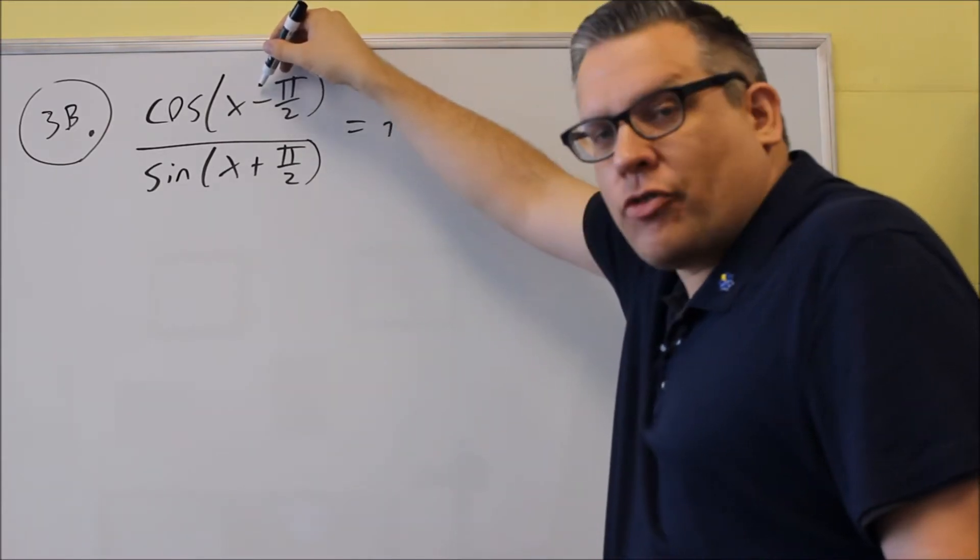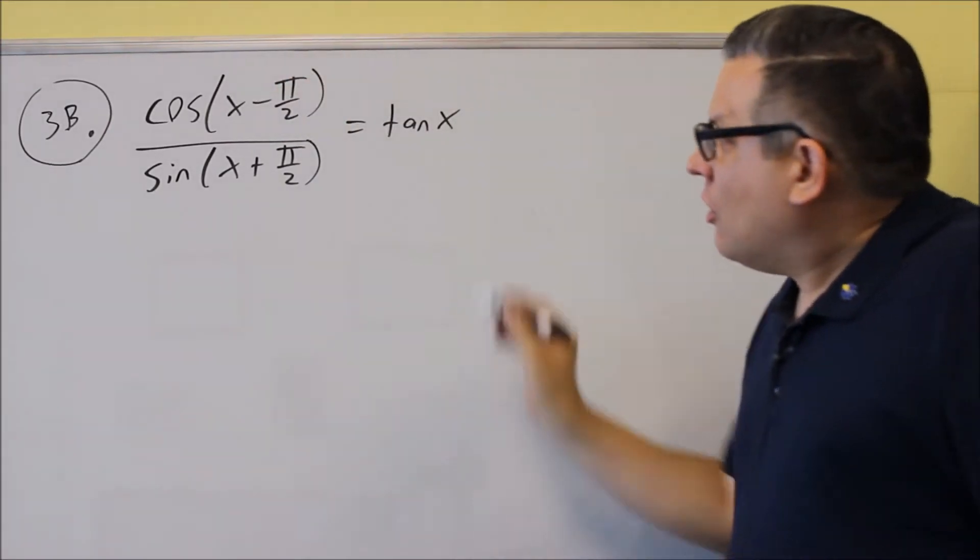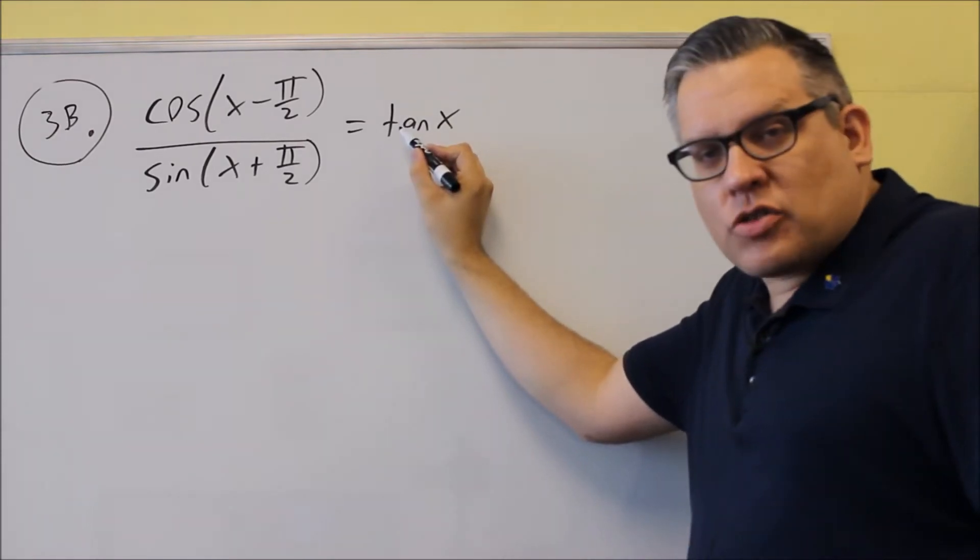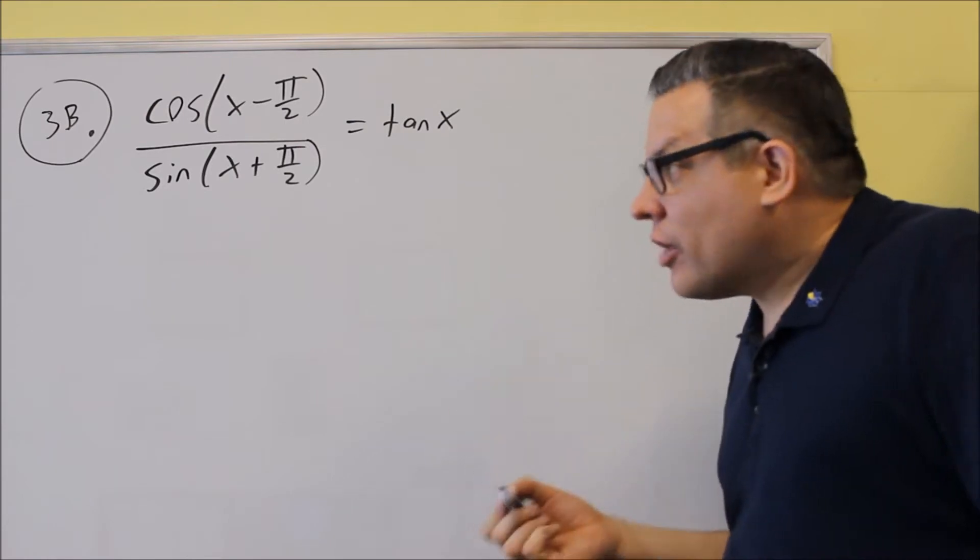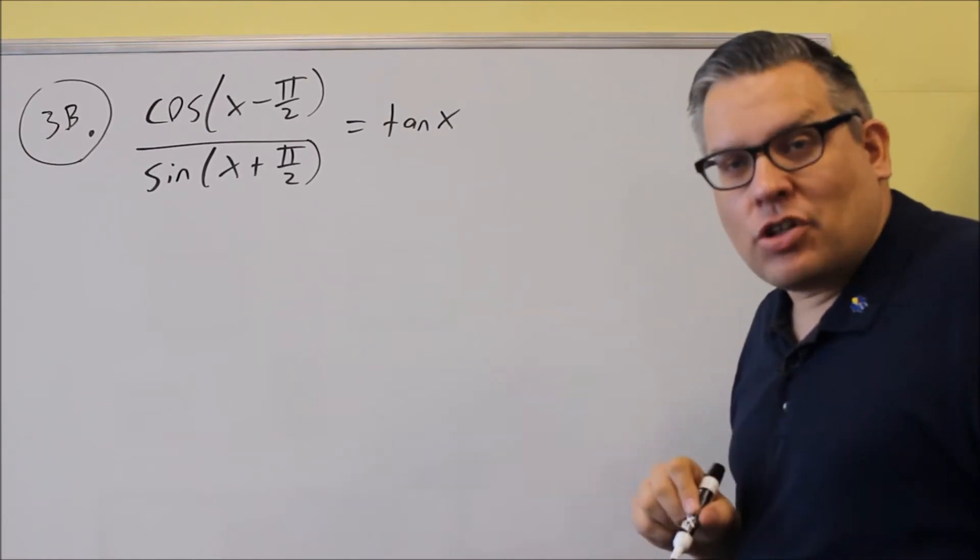A difference formula for the top one and a sum formula for the bottom one. What I'm also going to do, when I plug those formulas in, I'll change the tangent into sines and cosines, one of our strategies that we use for establishing the identity.